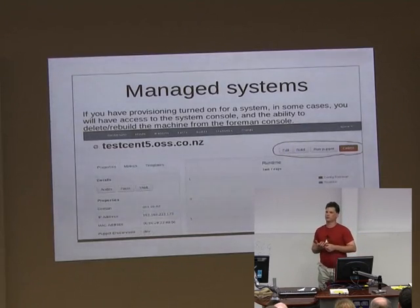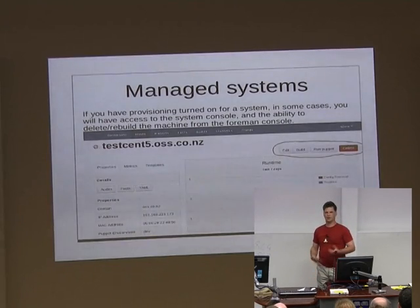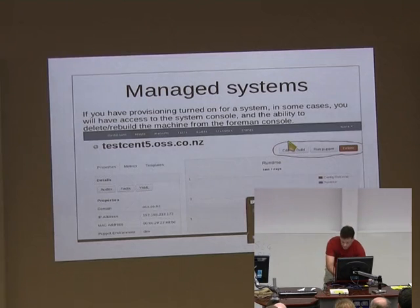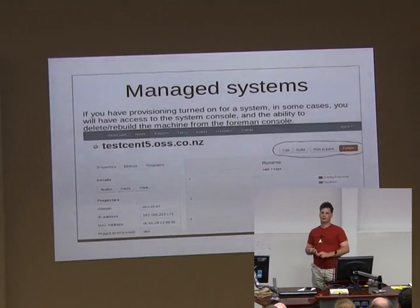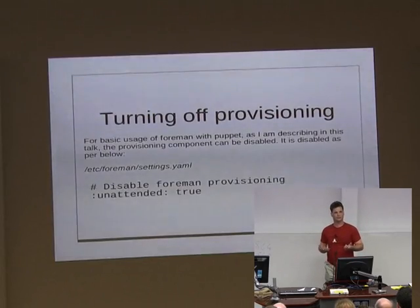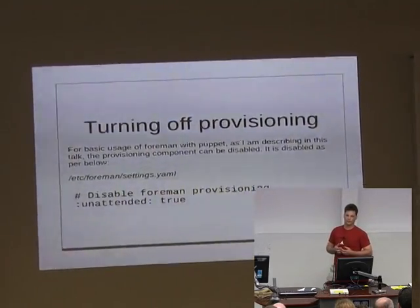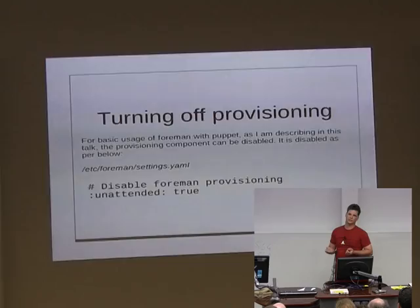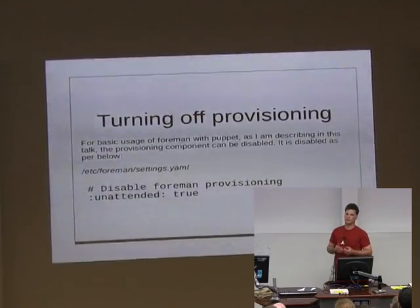If you're managing a system with Foreman using the provisioning components, and it knows about the hypervisor, you also have the ability to delete machines, which will remove them off the hypervisor, or reprovision them. For most use cases in our organisation and across our customers, we actually turn the provisioning components off because we're not provisioning machines a lot. When we are, it might be on Amazon where we need to do autoscaling or smart provisioning.